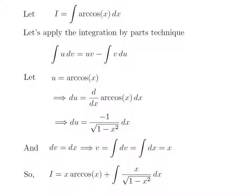Here, I have put the values of u, v, and differential of u. So I got I is equal to x times arccos(x) plus the integration of x divided by the square root of 1 minus x squared.